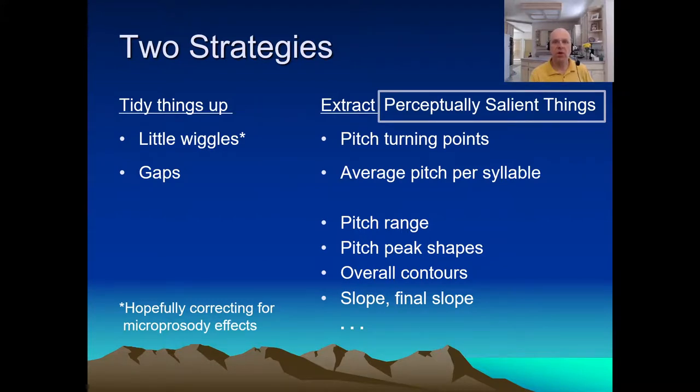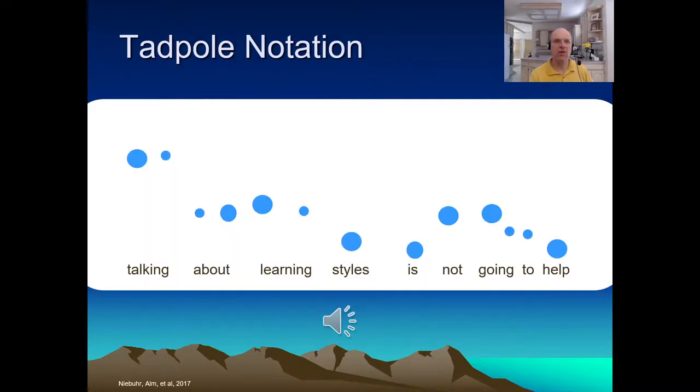Do we really know what matters? Well, sometimes we do, a little bit, at least for English. For English, we know pitch height is important, and that pitch on stressed syllables is more salient. So, we can use a traditional British notation, sometimes called tadpole notation, where we mark pitch height with height on the page, syllable by syllable, and mark loudness by circle size. Further, if there are significant pitch excursions within a syllable, we indicate that too. Some of these look like tadpoles, hence the name.